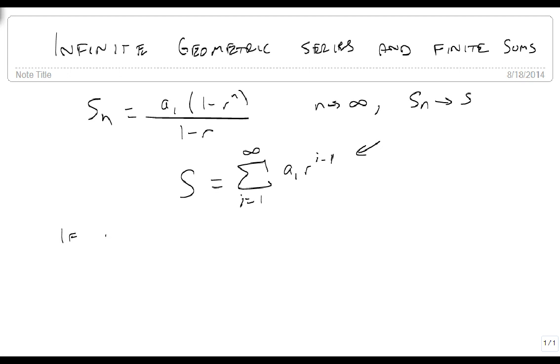But if r is between minus 1 and 1, or in other words, if the absolute value of r is less than 1, then we get a specific case because the value of r to the n will get closer and closer to 0 as n gets closer and closer to infinity. So we're adding less and less each time.